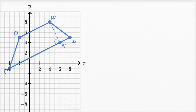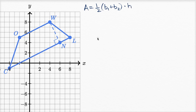We know how to figure out the area of a trapezoid — we have videos where we derive this formula. The area of a trapezoid, put simply, is equal to the average of the length of the bases: one-half times base one plus base two, times the height. So what are our bases here, and what is going to be our height?